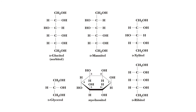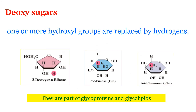So we get sugar alcohols by means of reduction reactions. The next sugar derivative is deoxysugar. When one or more hydroxyl groups — OH groups — are replaced by hydrogen atoms, we get deoxysugar.